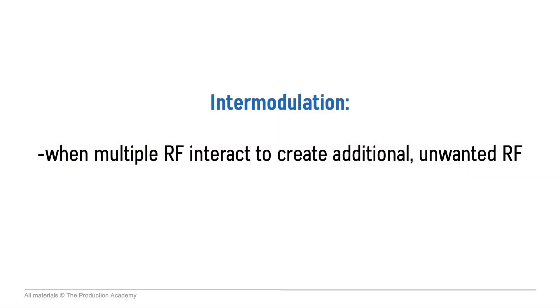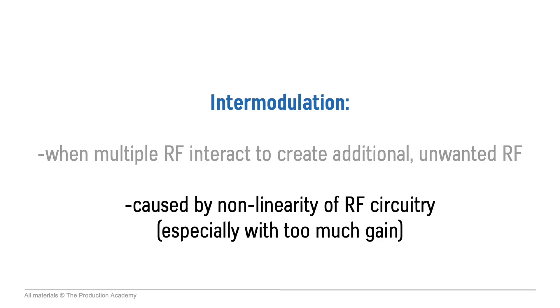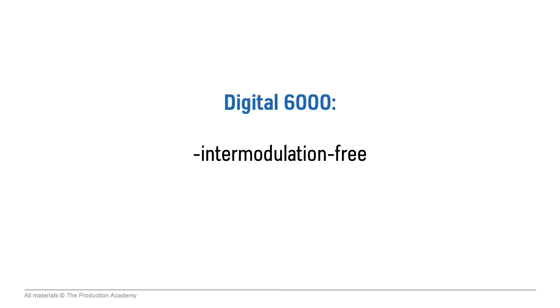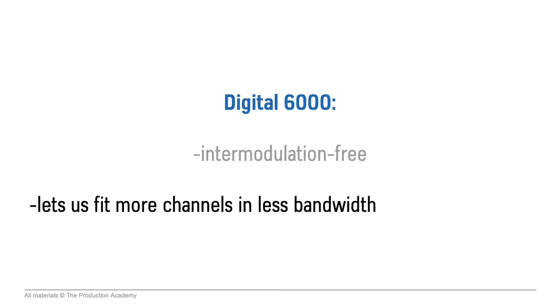Intermodulation is when multiple radio frequencies interact to create additional unwanted frequencies, and is caused by the non-linearity of RF circuitry, especially when we add too much gain in our antenna system. Almost all wireless systems have some degree of intermodulation, though with best practices this should be essentially inaudible. This digital 6000 system is actually intermodulation free, letting us fit way more channels in less bandwidth. For the vast majority of RF systems, the good news is that intermodulation is predictable, and we can use an equation to predict exactly where it occurs.